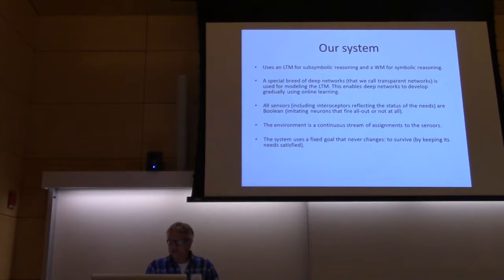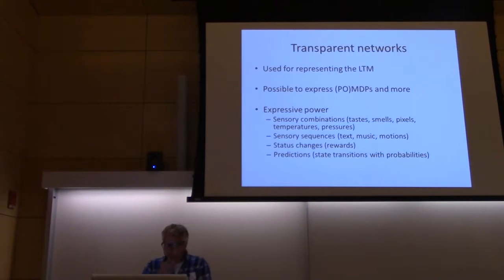All the sensors are Boolean. Some of the sensors are interoceptors that will reflect the status of the needs. They are Boolean because we imitate neurons, and a neuron will either fire all out or not fire at all, so it's a 0-1 situation. The environment is more or less a continuous stream of assignments to the sensors, those sensors that fire at a given moment. The system has one fixed goal that never changes, and that only goal is to survive by keeping its needs satisfied. We never change those goals at all, we never change the reward function. That was one of the requirements for an autonomous system.